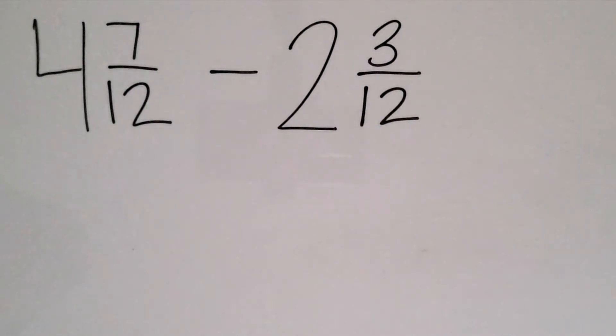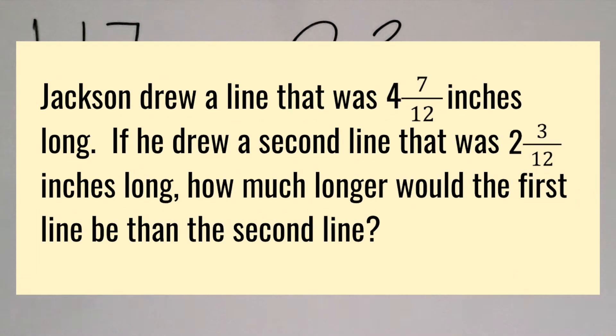Let's look at this expression represented in a word problem. Jackson drew a line that was 4 and 7 twelfths inches long. If he drew a second line that was 2 and 3 twelfths inches long, how much longer would the first line be than the second line?